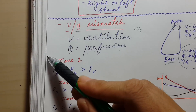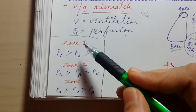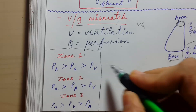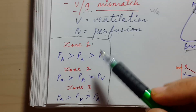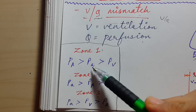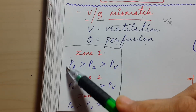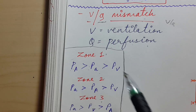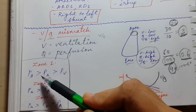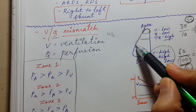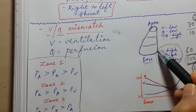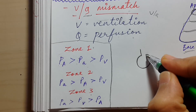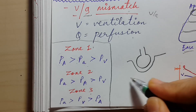One of the most confusing topics for students is zones 1, 2, and 3 as given in First Aid. The most important thing to remember first: PA (capital A) and Pa (small a) are not partial pressures of oxygen — they are simple pressures. Zone 1 is the upper part of the lung, zone 2 is the middle part, and zone 3 is the lower part.